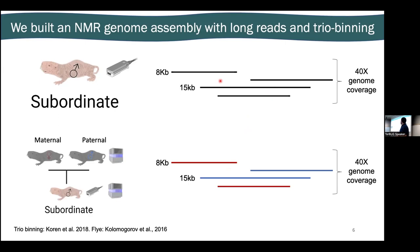A secondary thing to keep in mind is that mole rats, like us, have diploid genomes — so there are effectively two assemblies in every one of our cells: our maternal haplotype and our paternal haplotype. So what we did was take advantage of a trio binning approach where, using k-mer-based assignments, we take short read sequencing from the parents and assign each individual long read to its haplotype of origin. We can then assemble two genomes simultaneously.